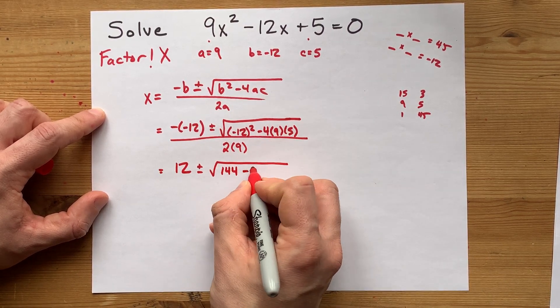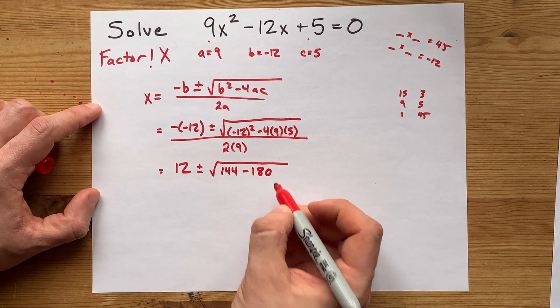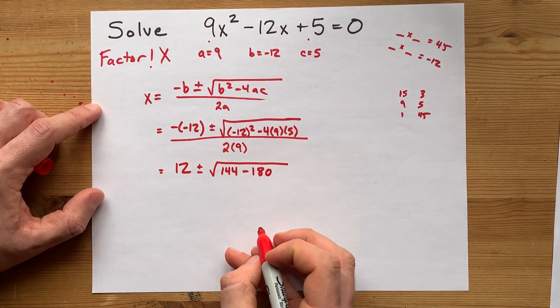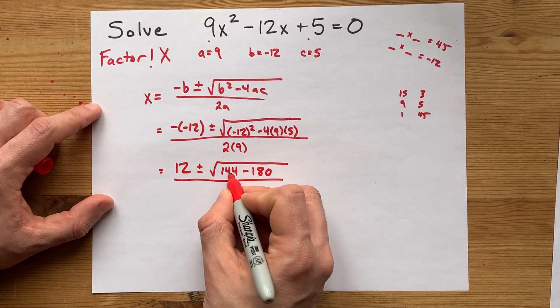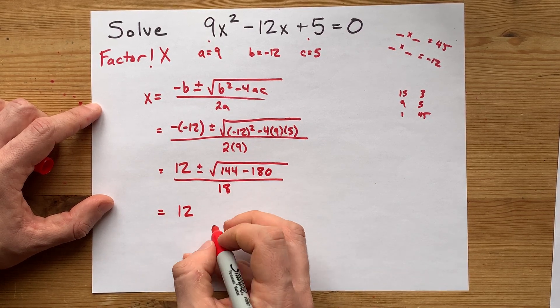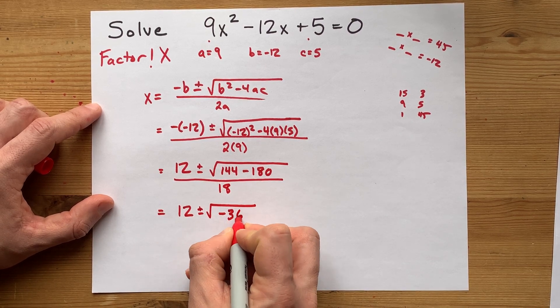Negative this is... Oh, I see a problem here. Yeah, I have that right. Negative 4 times 5 times 9 is negative 180. We're going to end up with the square root of a negative, so 12 plus or minus the square root of negative 36.